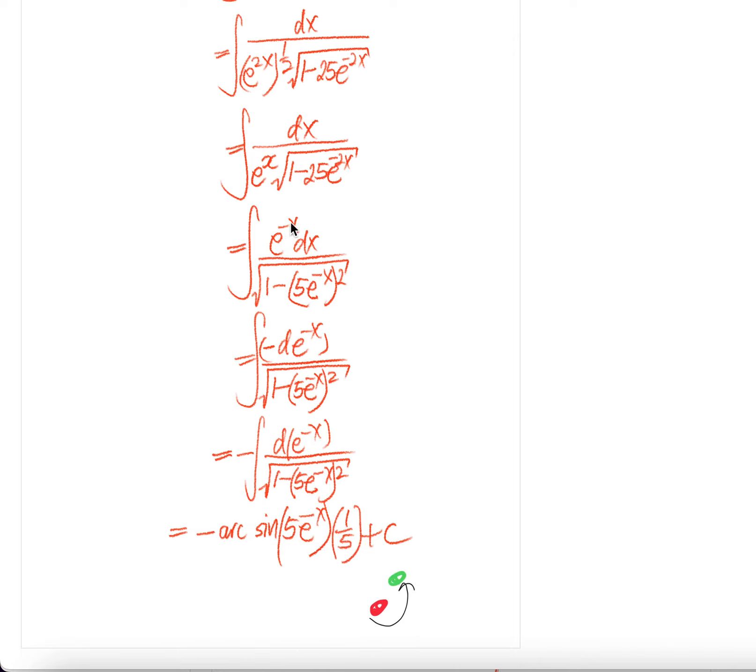Now we can push this into dx. The derivative of e to the power of negative x is e to the power of negative x times the derivative of negative x is negative 1. Negative 1 cancel that, e to the power of negative x dx.